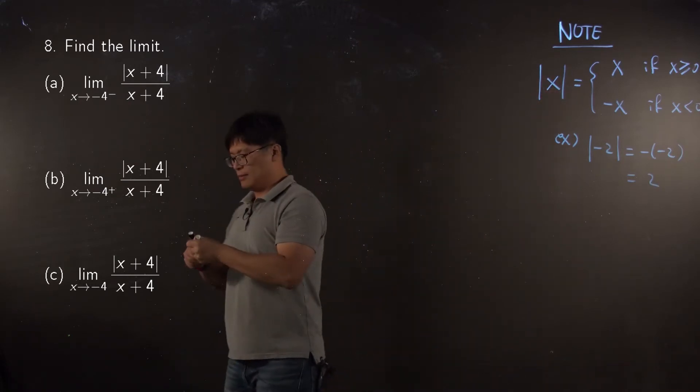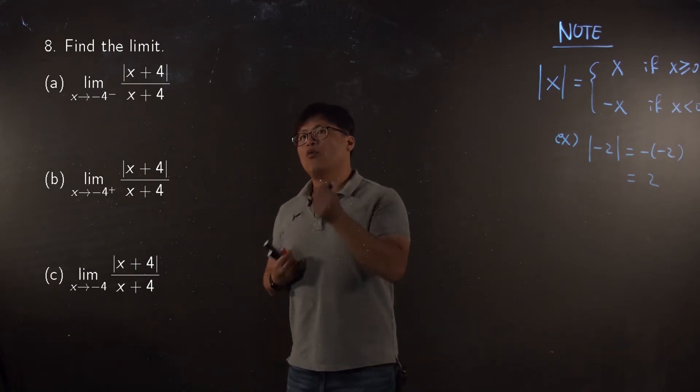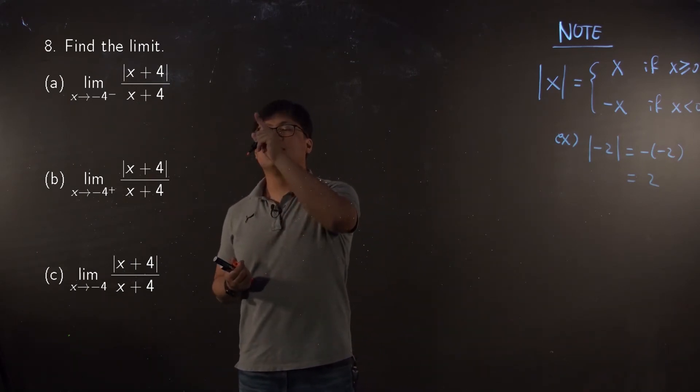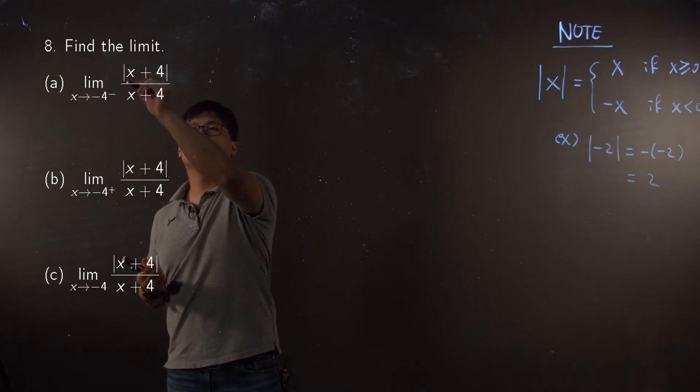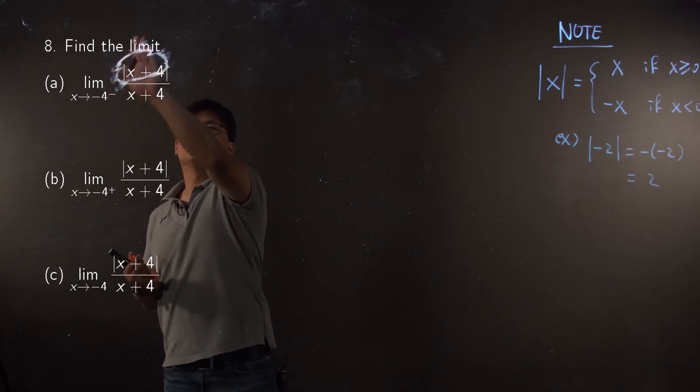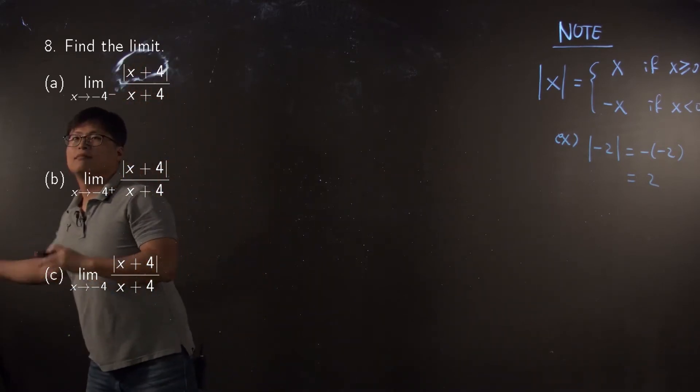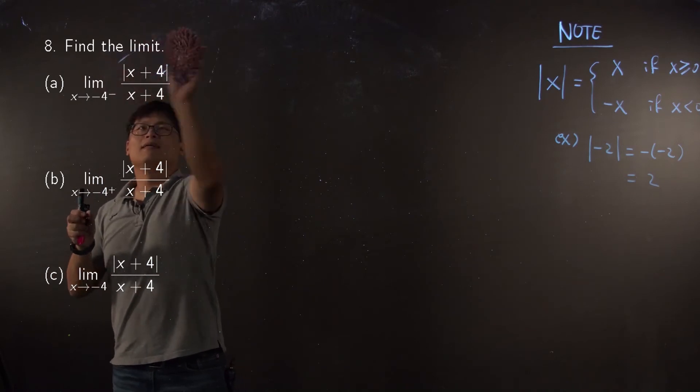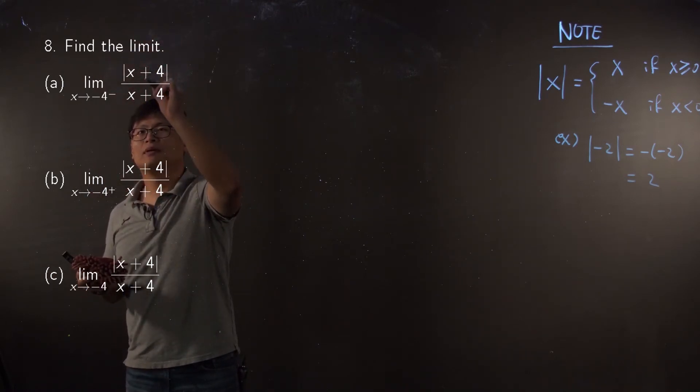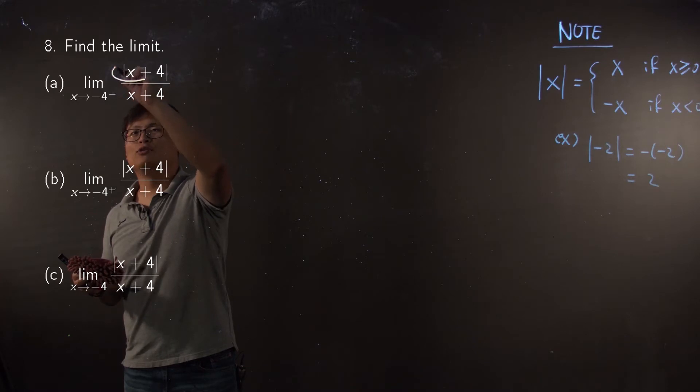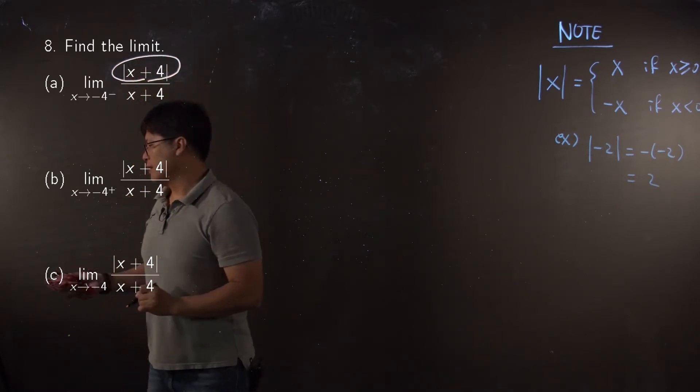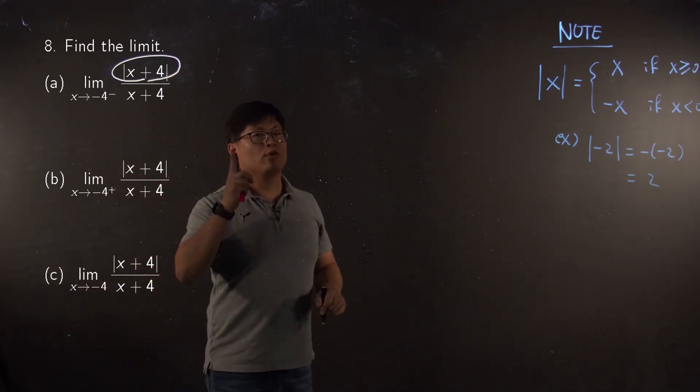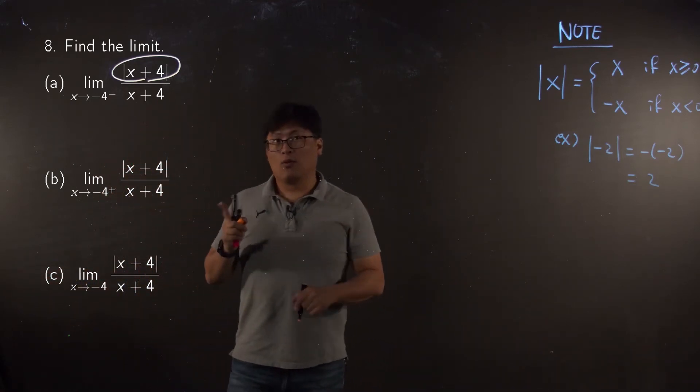Let me come back here. So look at the first problem. When you plug in negative four, it is exactly zero by zero form. But, I would like to talk about this part. This part. So, look at the inside of absolute value, which is x plus four. What about that?